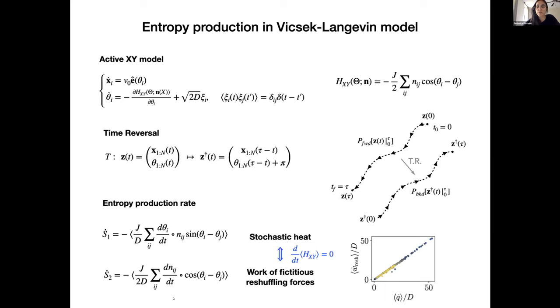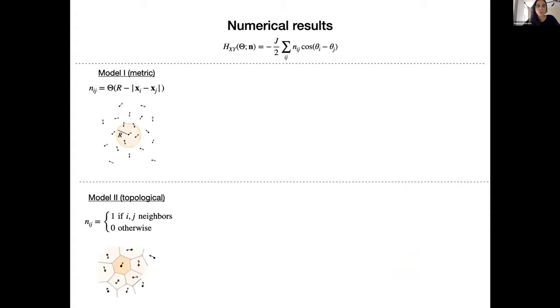The second formula can also be obtained by integration by parts from the first formula, neglecting the total variation of the XY energy. And the second formula can be interpreted as the work of some fictitious reshuffling forces that rewire the interaction network. And as a sanity check, it is plausible to assume that at the steady state, the XY Hamiltonian is constant, or at least grows sublinearly with the time, the time length of the trajectory. And indeed, this was realized in our simulations at the steady state.